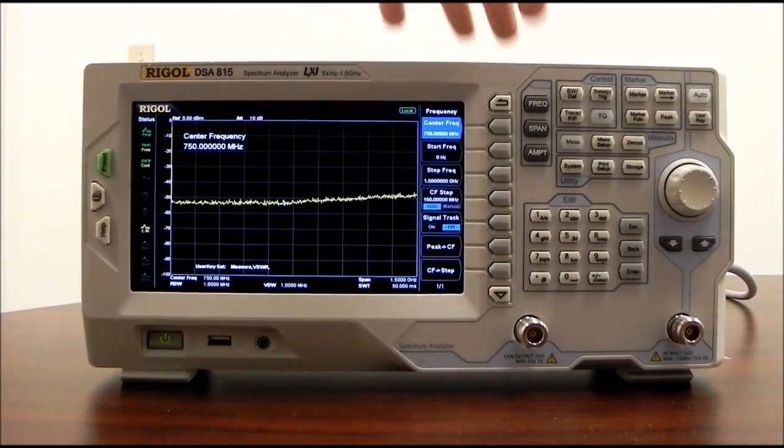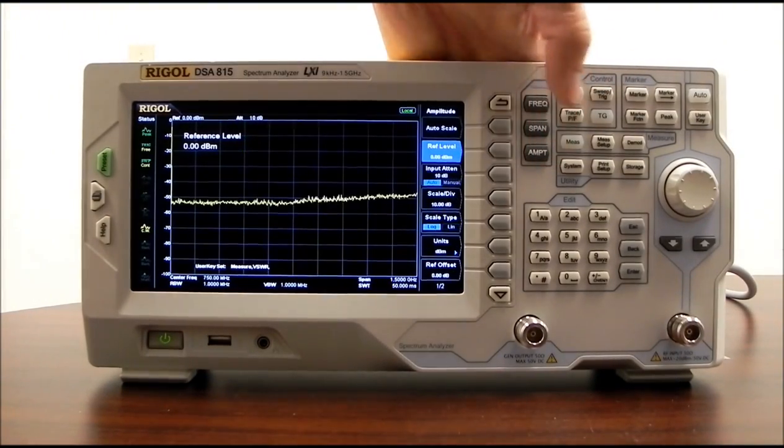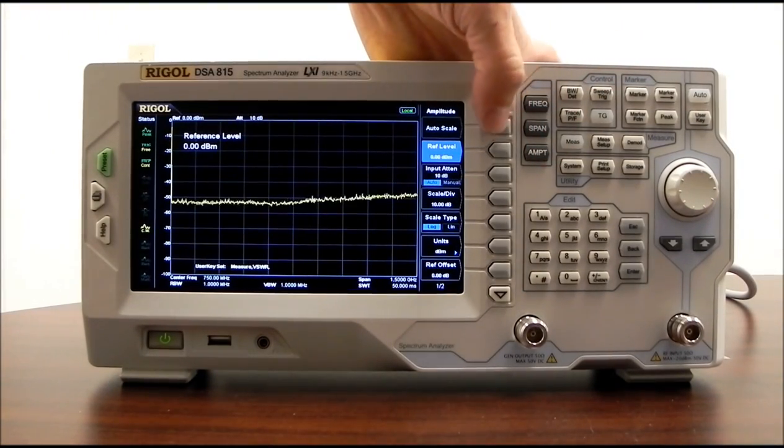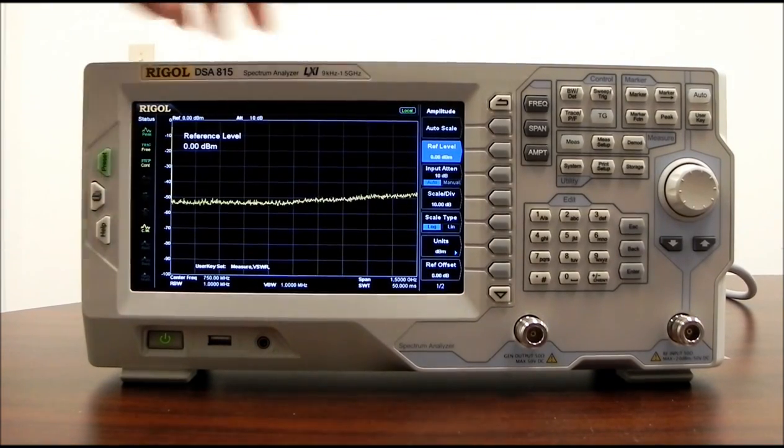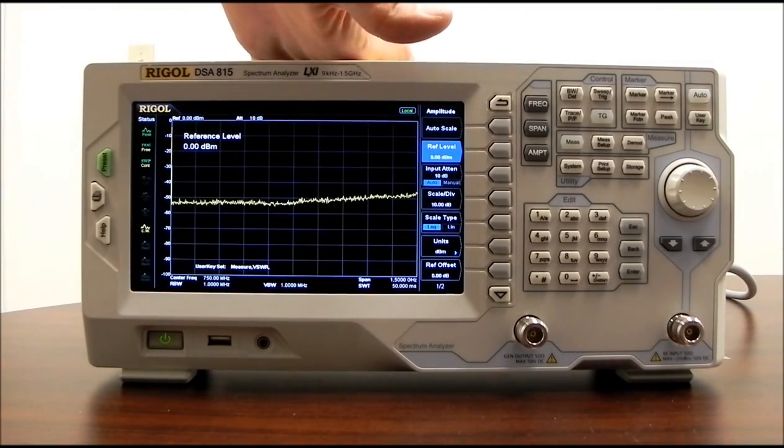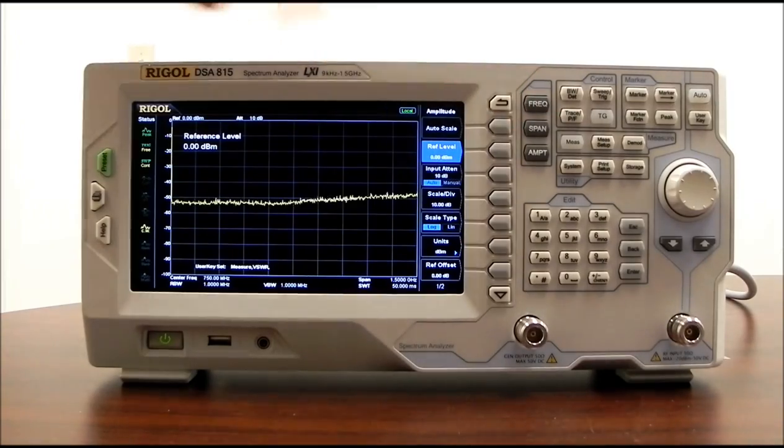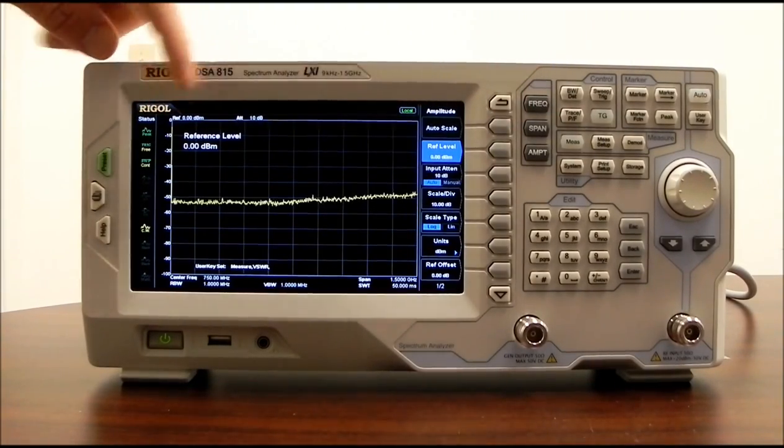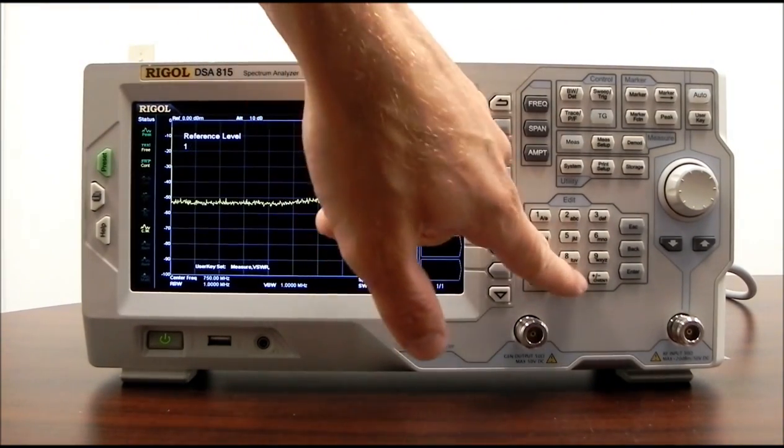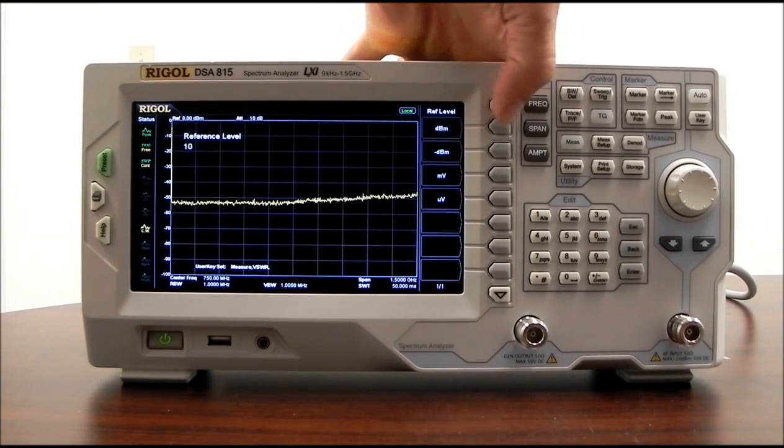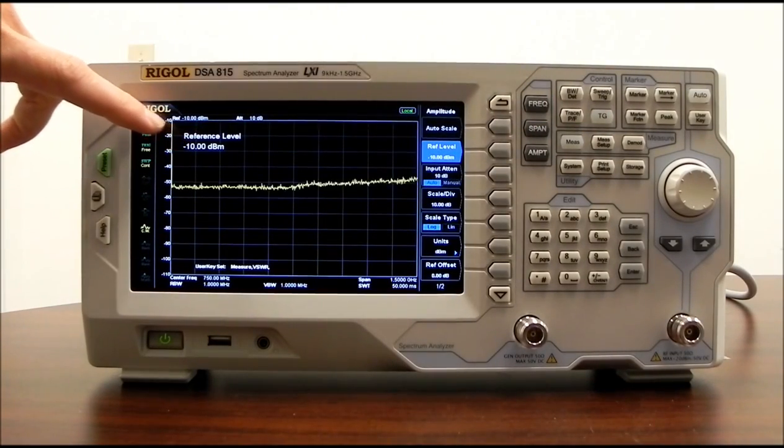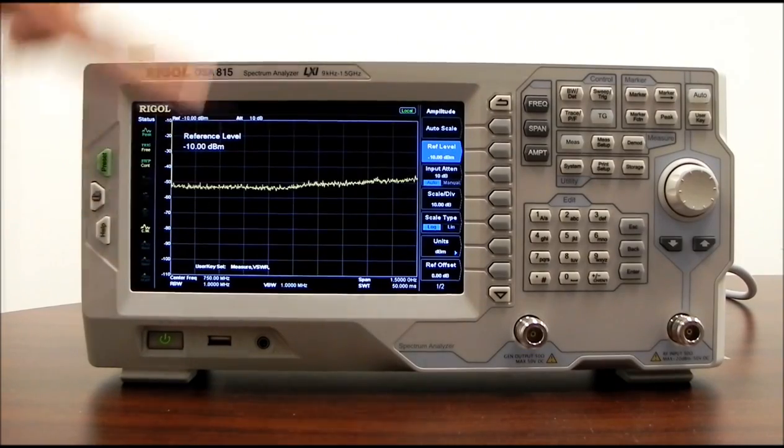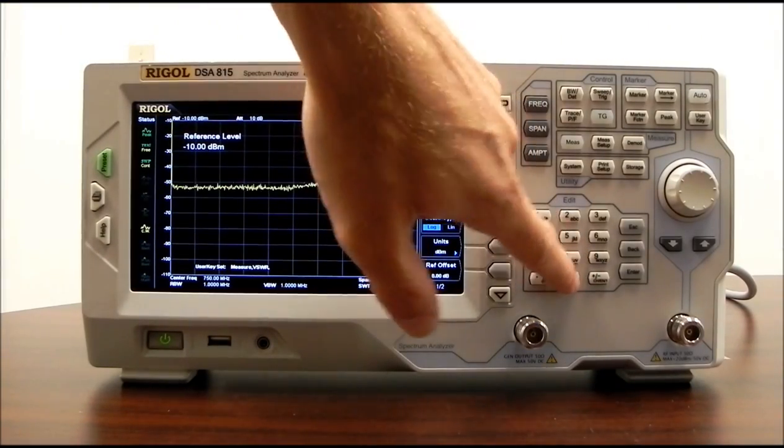Now let's take a look at the amplitude menu. Under the amplitude menu, we've got auto scale, which is going to adjust the actual scale, the values of each of the divisions to match the incoming input. We have reference level. Reference level is that top line. So if we wanted to go to -10 dBm, we could press 10 on the keypad and press minus dBm. And now you'll note that it says reference level minus 10 dBm. So basically moved that whole window up.